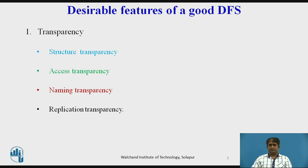Naming transparency: the naming of a file should give no hint as to where the file is located. A file should be allowed to move from one node to another in a distributed system without having to change the name of the file. Replication transparency: if a file is replicated on multiple nodes, both the existence of multiple copies and their locations should be hidden from the clients.